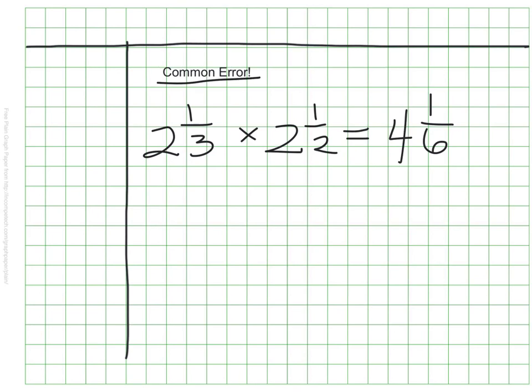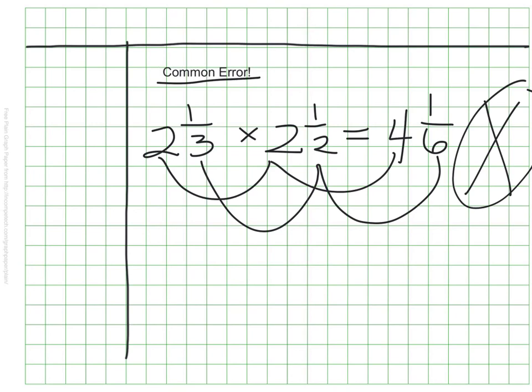Can you see what it is I did wrong? Did you notice that to get this answer, I just did two times two equals four, and one-third times one-half equals one-sixth? That does not work. We cannot do that. That would be like saying twenty-one times thirty-two is sixty-two, because two times three is six, and one times two is two.